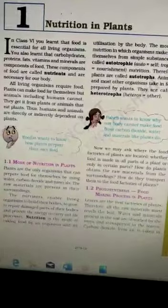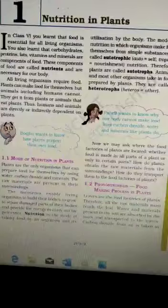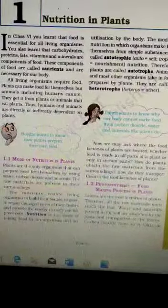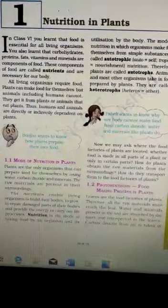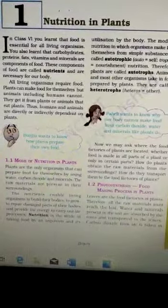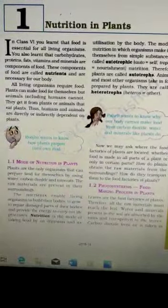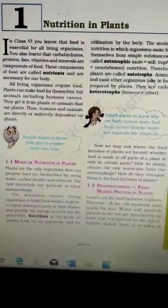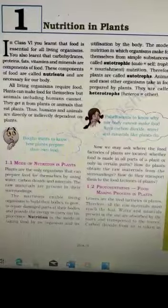Now students, in Class 6 we learned that food is essential for all living organisms. We also learned that carbohydrates, fats, proteins, vitamins, and minerals are components of food. These components are called nutrients and are necessary for our body. All living organisms require food for themselves, but animals